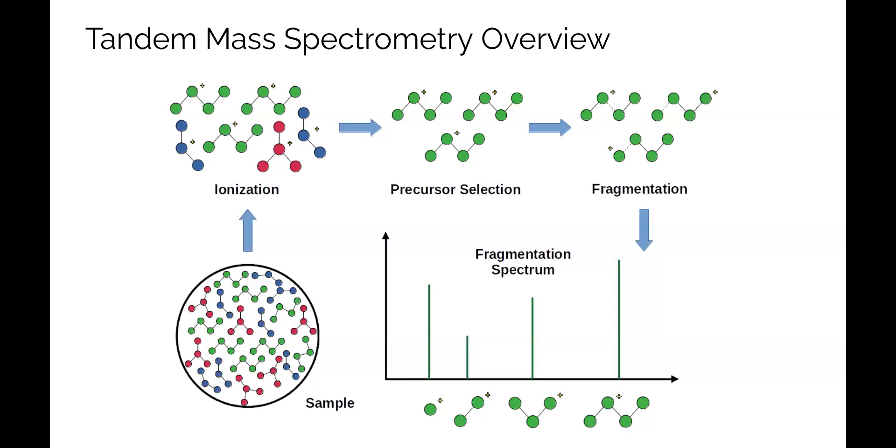The spectrum acts as a sort of fingerprint, providing an additional layer of structural information that can be used to differentiate between molecules with similar masses.